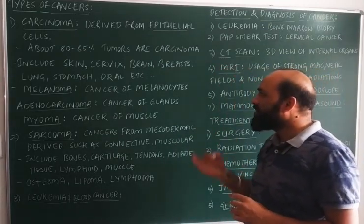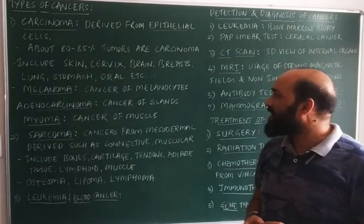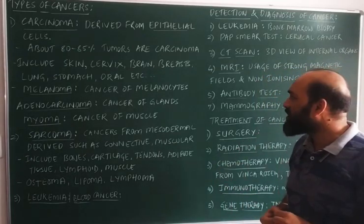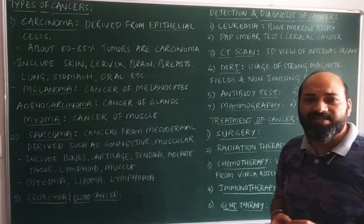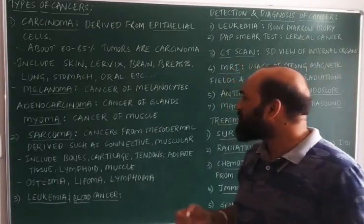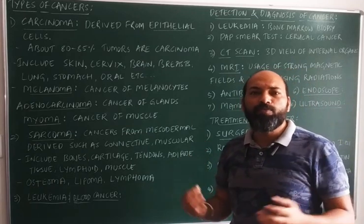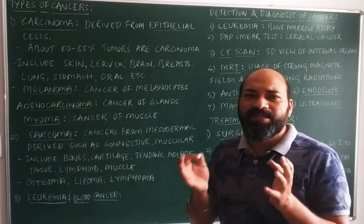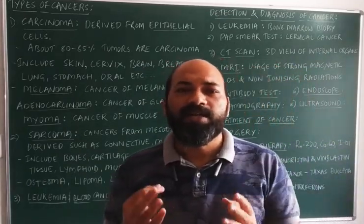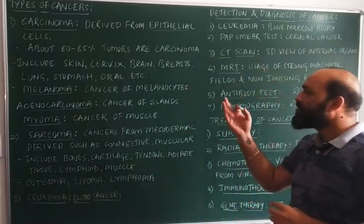Epithelial cell-derived cancers are very commonly seen. Examples of carcinoma include skin cancer, cervical cancer, brain cancer, breast cancer, lung cancer, stomach cancer, oral cancer, and many more. All these cancers come under the category called carcinoma.